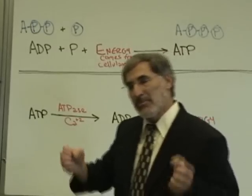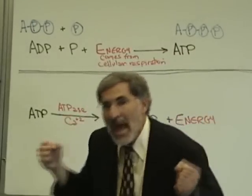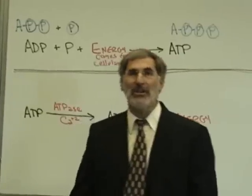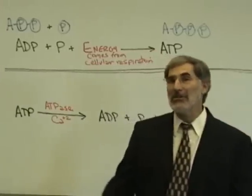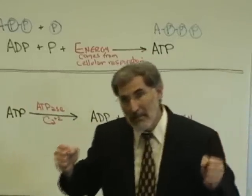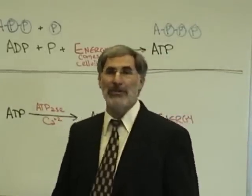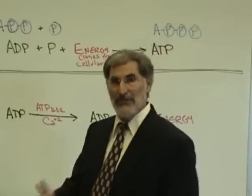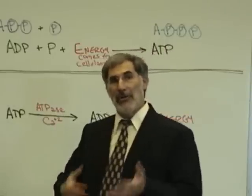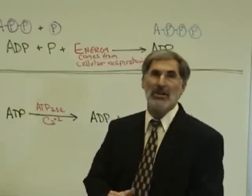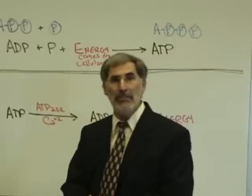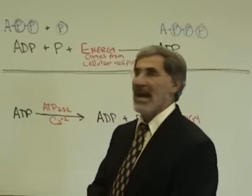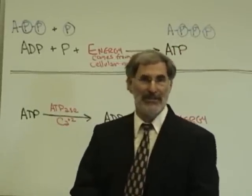The third phosphate is split off the ATP, turning ATP into ADP and phosphate, and it releases energy. That energy provides the power for muscle contraction, cell growth, cell division, the generation of nerve impulses, and all the biochemical reactions occurring in living things.